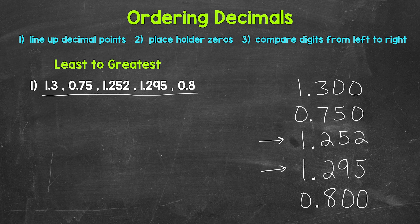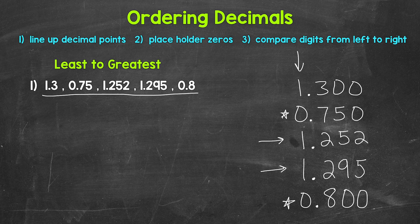Now we move on to comparing digits from left to right, so we can start putting these in order. We'll start with the place furthest to the left and work our way right. The place furthest to the left here is the ones place — that's our greatest place value. We have one, zero, one, one, and zero. We want the smallest digit in value since we are going from least to greatest. That's zero, so we have this narrowed down to these. Since those digits are the same, we go to the next place to the right — the tenths place. We have a seven and an eight. Seven is less than eight, so this is the least.